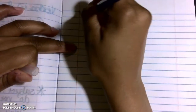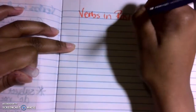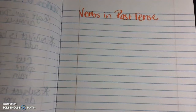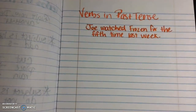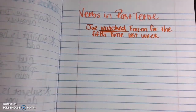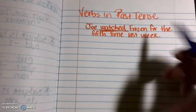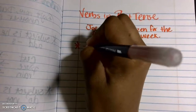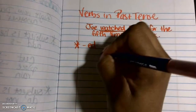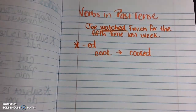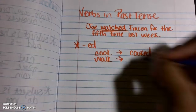Now we're going to move on to verbs in past tense. For example: Joe watched Frozen for the fifth time last week. Because this is an action that took place in the past, as in last week, this verb 'watched' has to be in past tense. You know that a verb is past tense when it ends in E-D. To turn most verbs into past tense, we simply add E-D. So 'cook' becomes 'cooked,' and 'walk' becomes 'walked.'